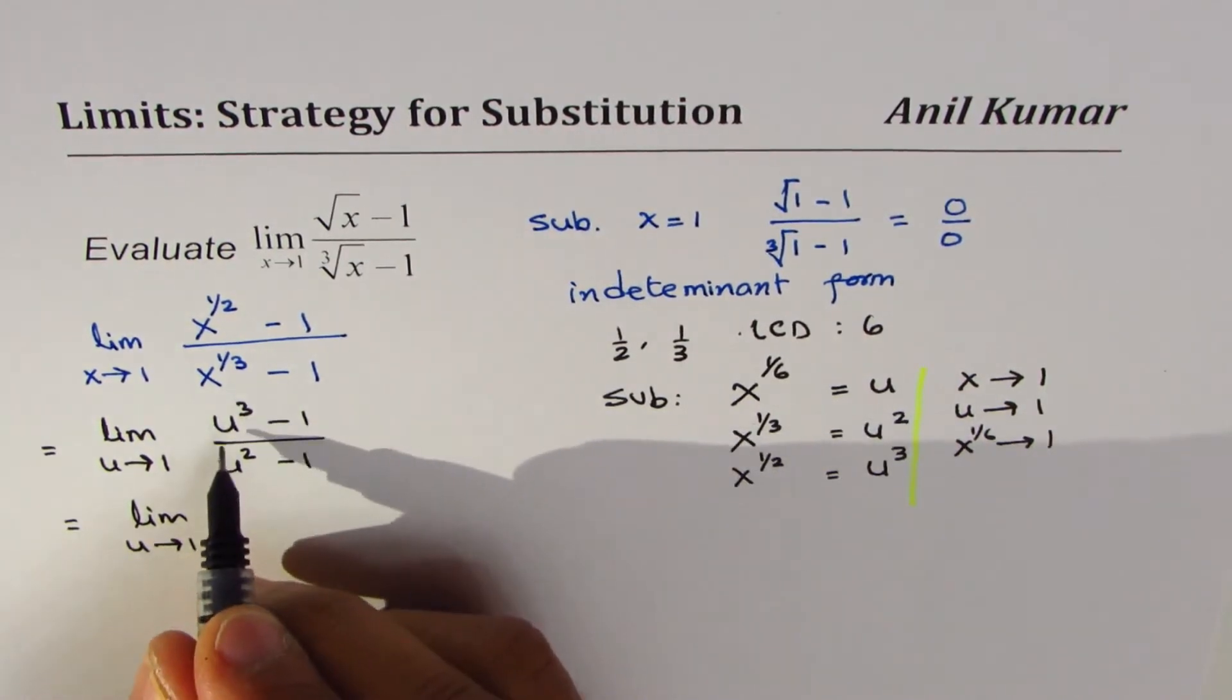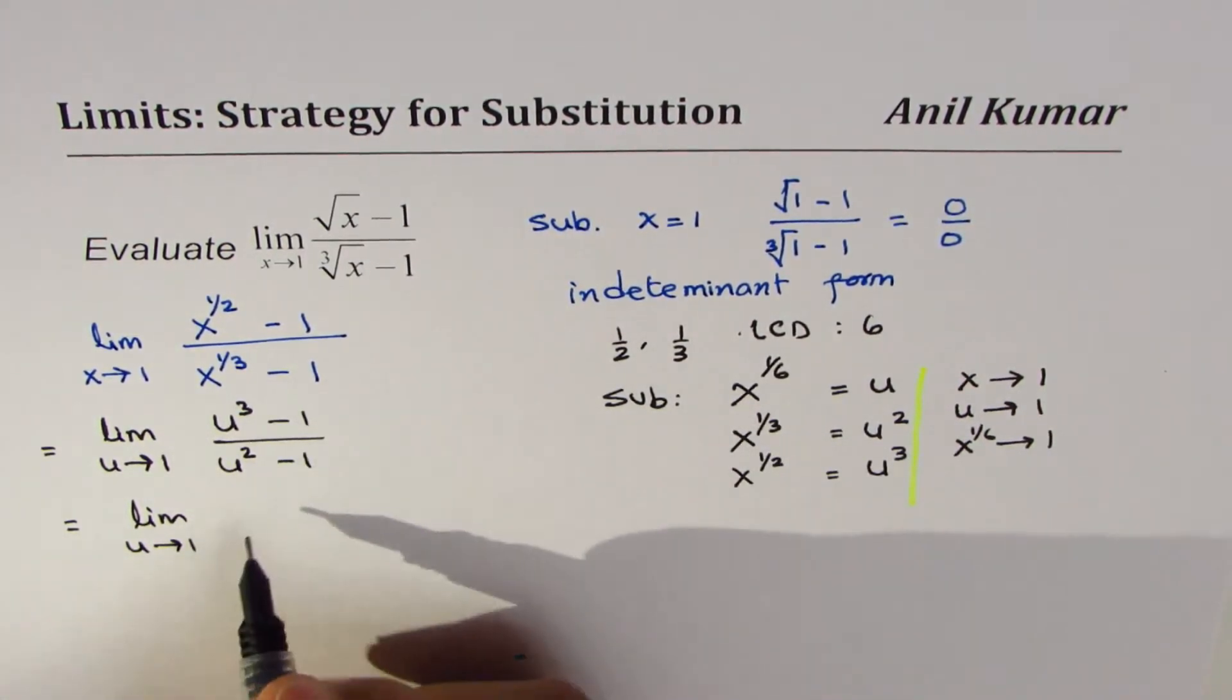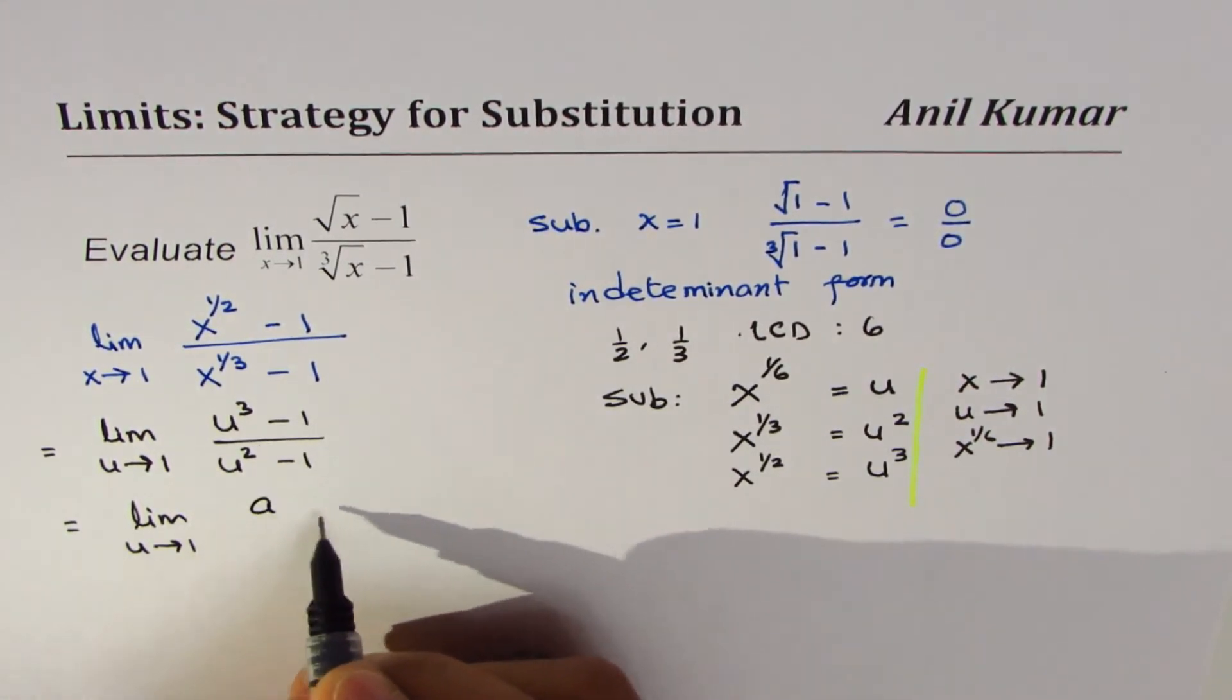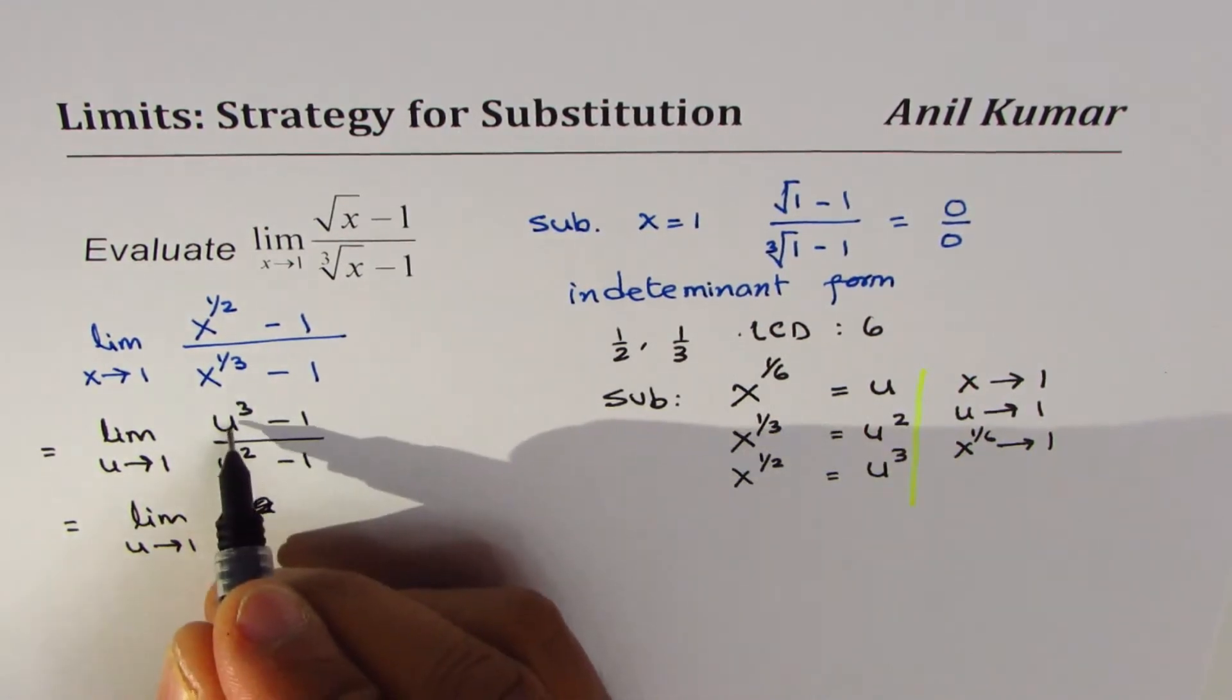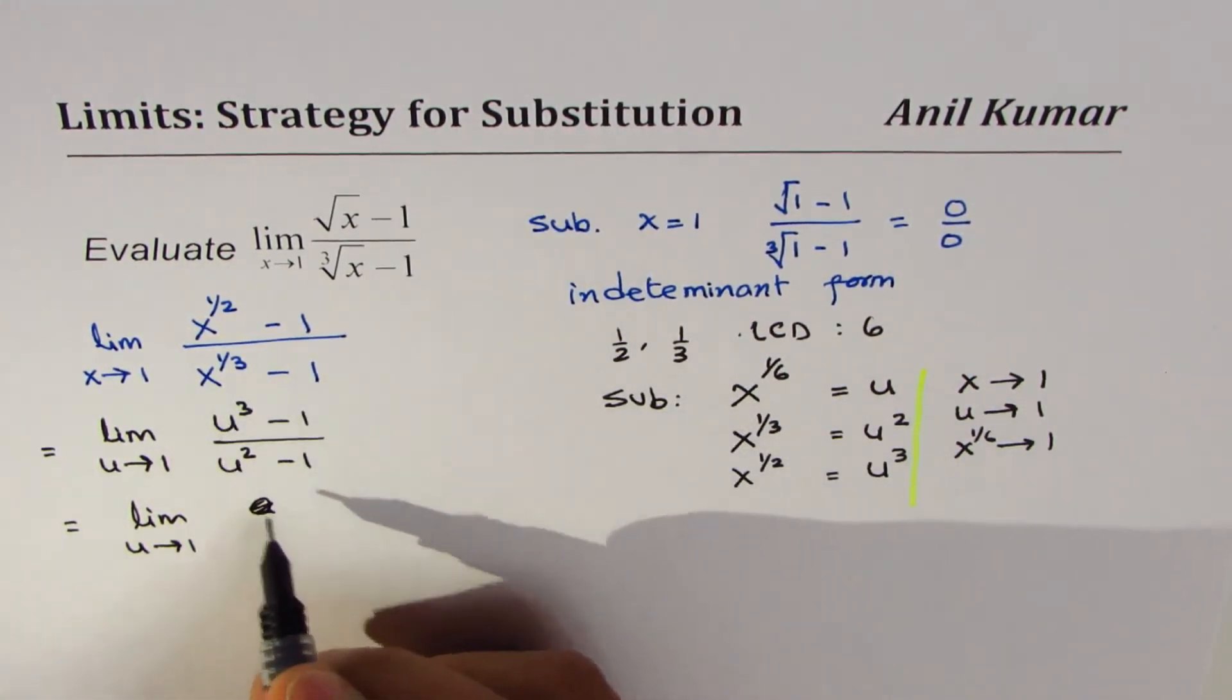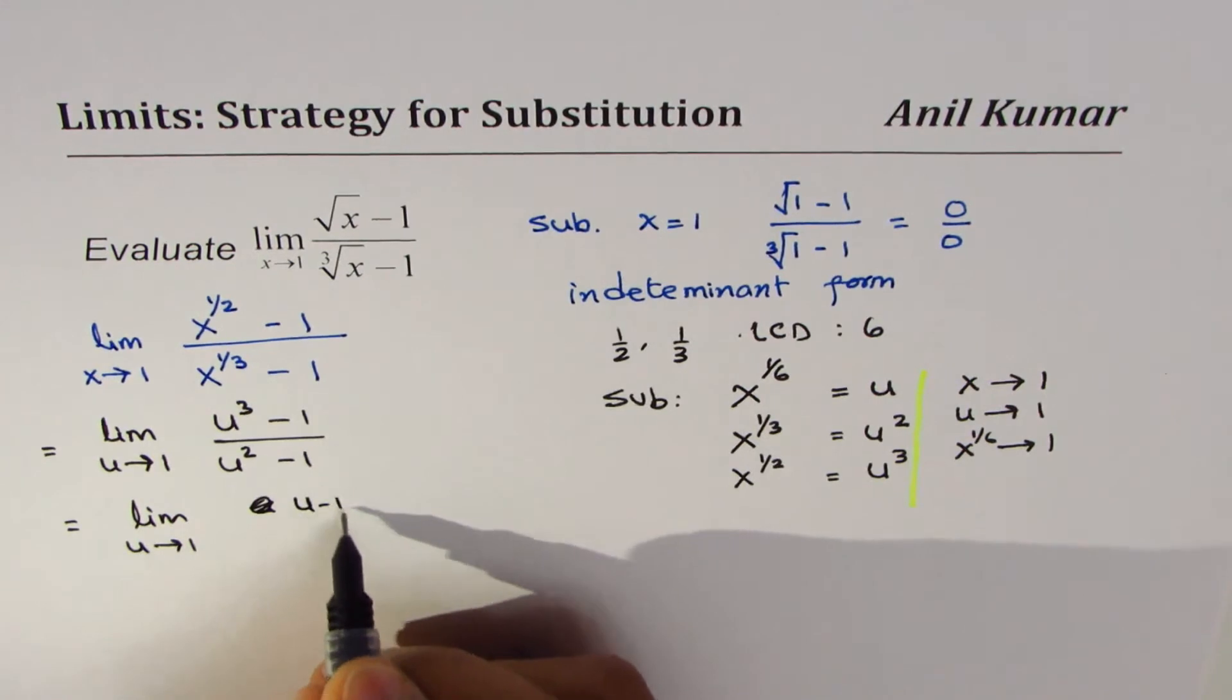So we get limit u approaches 1, a cube minus b cube formula - in this case a is u, so we have u minus 1 times u squared plus u plus 1.